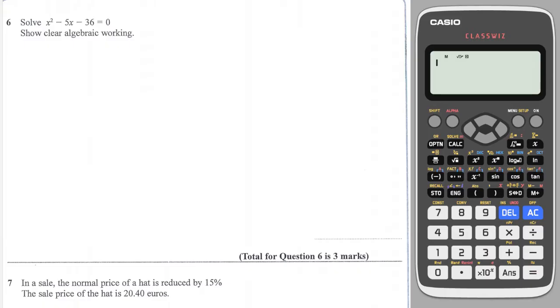Next question is another one we could do by factorising. So the AC term is 1 times minus 36, which is minus 36, and the B term is minus 5.